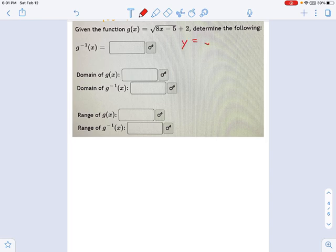So we'll do that now. So y equals the square root of 8x minus 5 plus 2, right? I changed g of x to y. Now I switch the x's and the y's everywhere I see them, which is not that many places. And now I'm going to start solving for y.